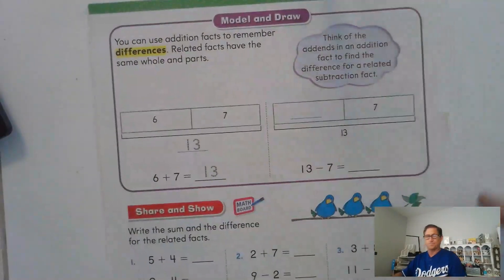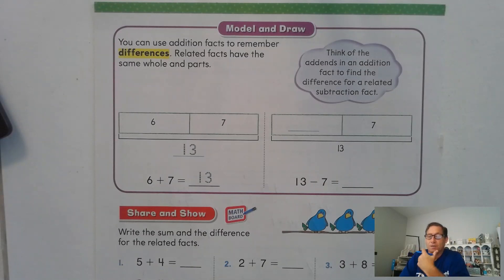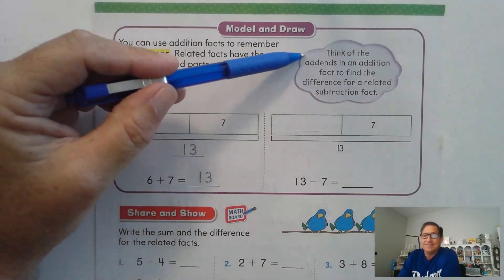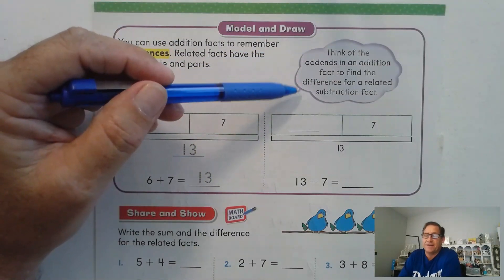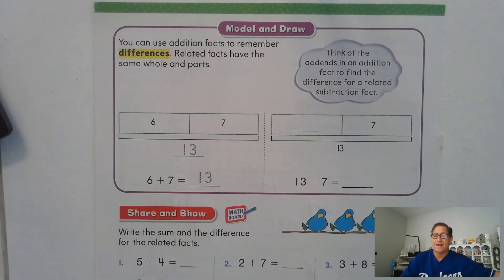Let's look at page 138. We can use addition facts to remember differences. Related facts have the same whole and parts — that's what we were just talking about. Seven plus eight equals 15 has the same facts, same parts, and same whole of 15. We can think of the add-ins — the numbers that we add in an addition fact — to find the difference for a related subtraction fact. That's why one of the standards for second grade is to memorize the math facts up to 20.